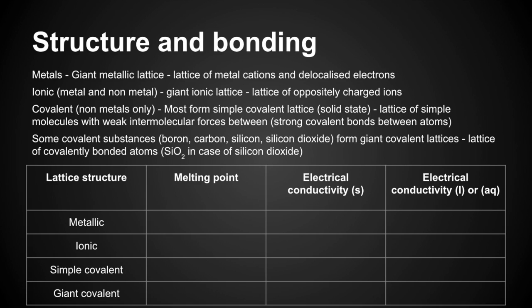Some covalent substances — a very small list: boron, carbon (graphite, diamond, and graphene), silicon, and silicon dioxide — form giant covalent lattices. That's a lattice of covalently bonded atoms, or SiO₂ units in the case of silicon dioxide. Here's a summary table for melting point and electrical conductivity: metallic — high; ionic — high; simple covalent — low; giant covalent — high. You'd need to discuss the energy required to overcome the attractions between these particles.